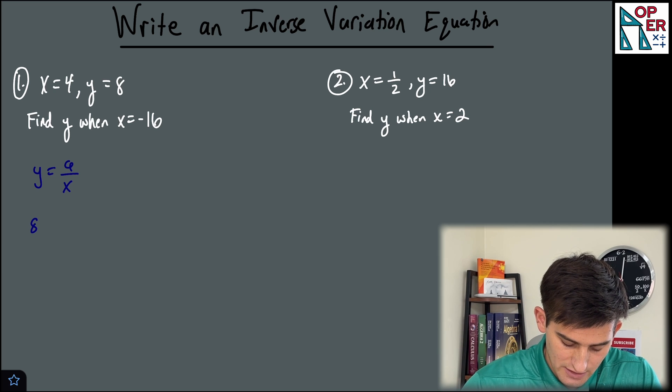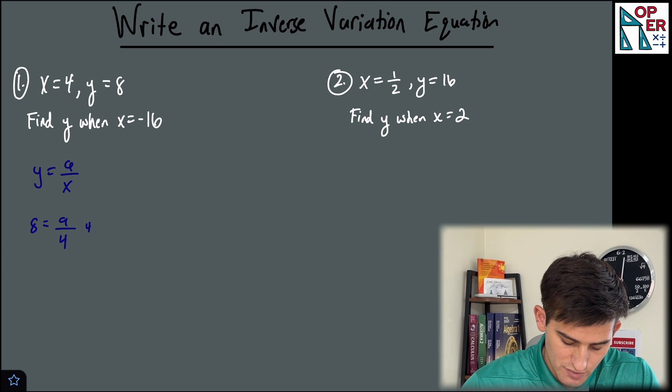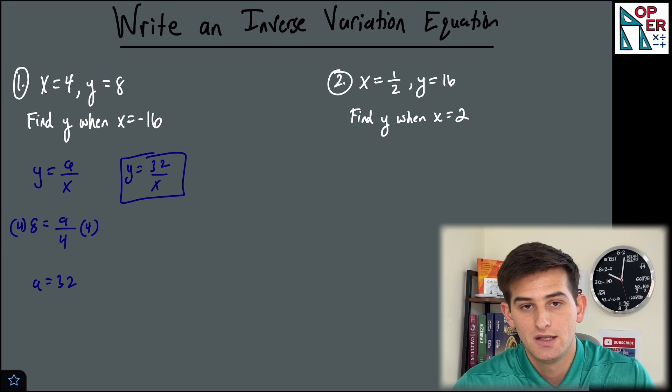So y is equal to eight and x is equal to four. So to solve for a, you could just multiply both sides by four and we're gonna get a is equal to 32. So now I could write my equation as y is equal to 32 over x. So that'd be my inverse variation equation.